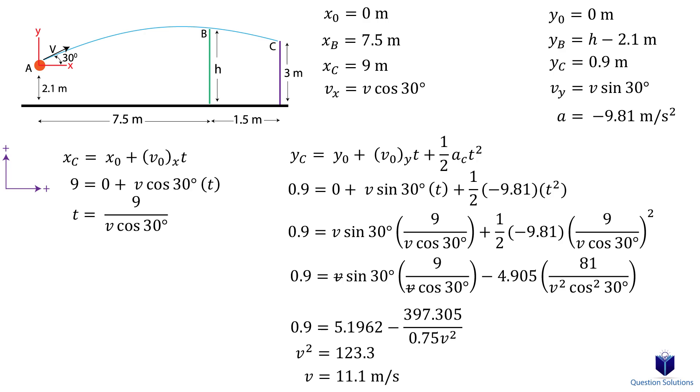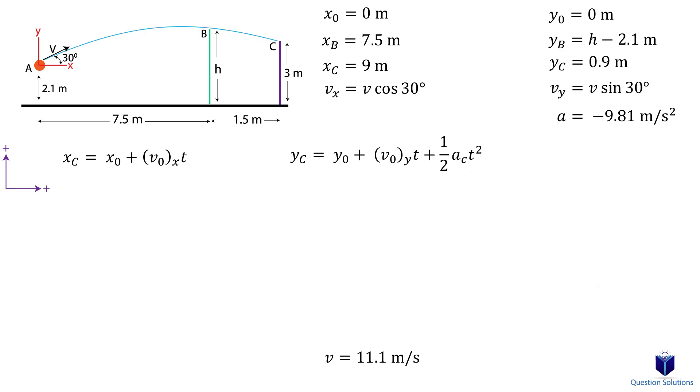Now we need to figure out the height of the ball at location B. Using our initial velocity value, we can write two new equations. Again, the first one is for horizontal motion, now focusing on point B. We can solve for t.